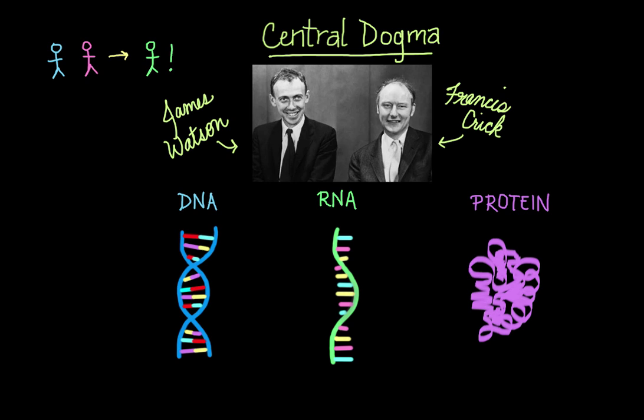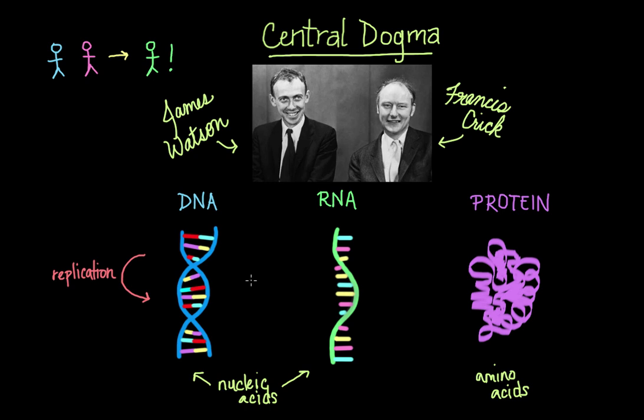And I think this simple explanation really just says it all. So we have three major players here. DNA and RNA are made up of nucleic acids, and proteins are made up of amino acids. The information starts at the most basic level stored as DNA, which can then be restored as DNA when DNA copies itself in a process called replication. Then DNA can be copied into RNA in a process called transcription. And then finally, you can use the information in RNA to synthesize a protein in a process called translation.